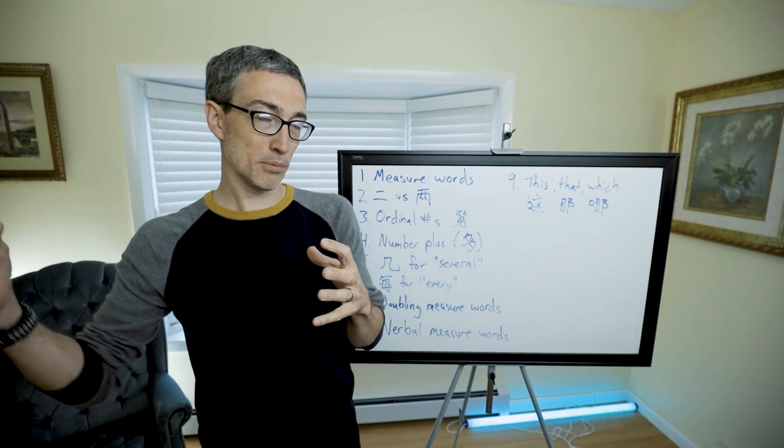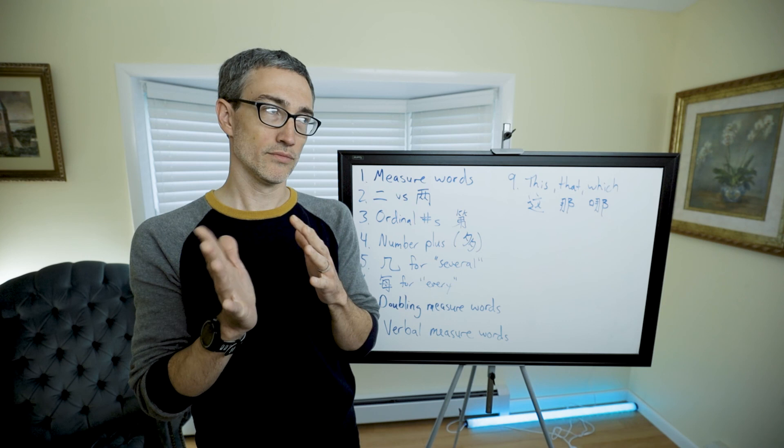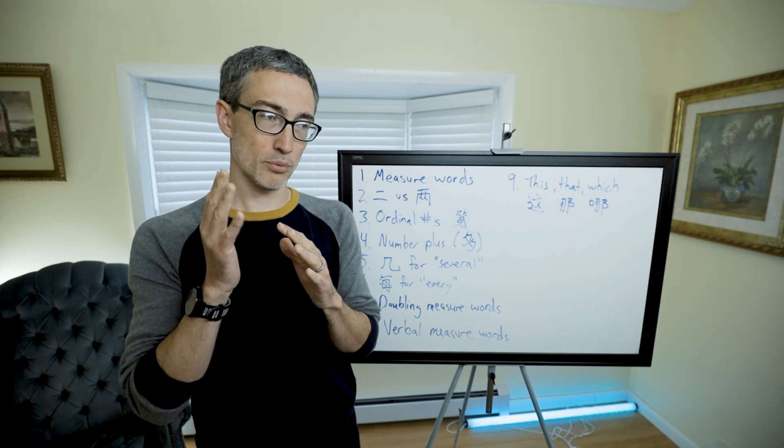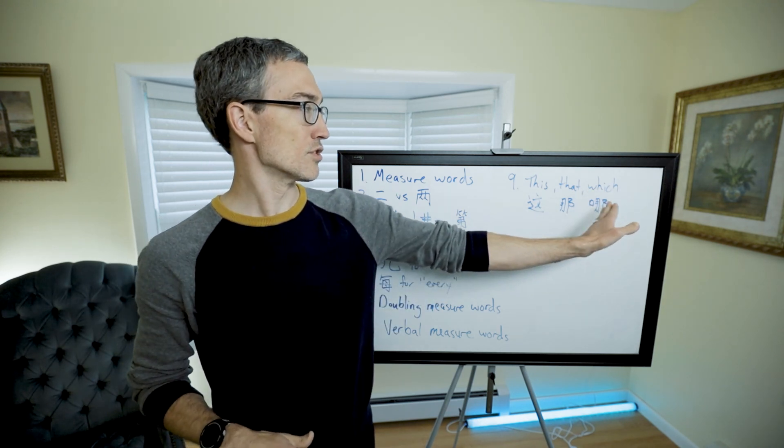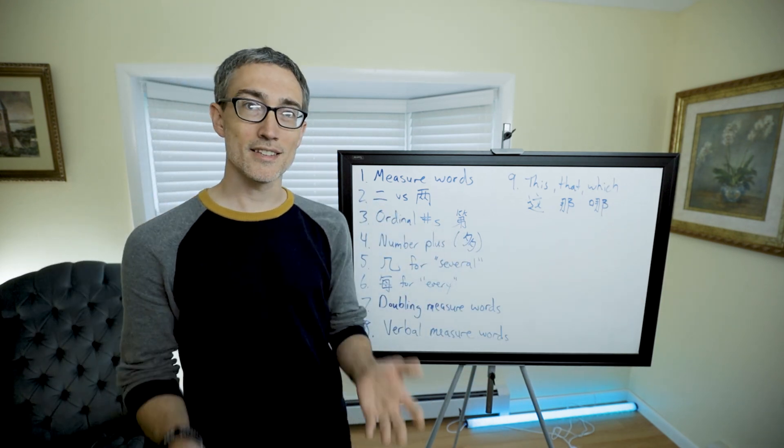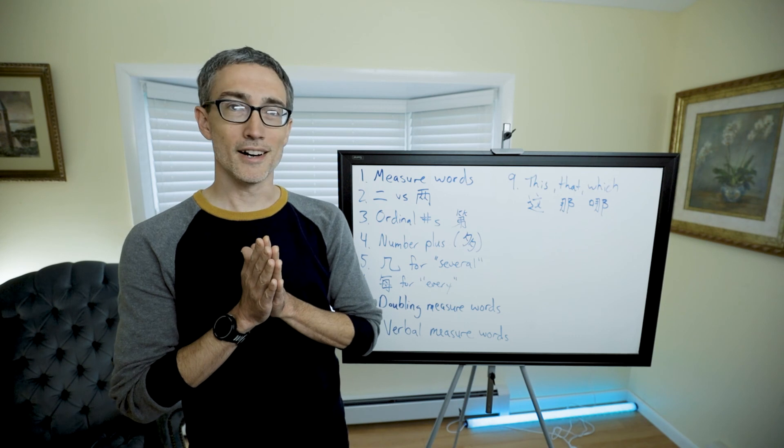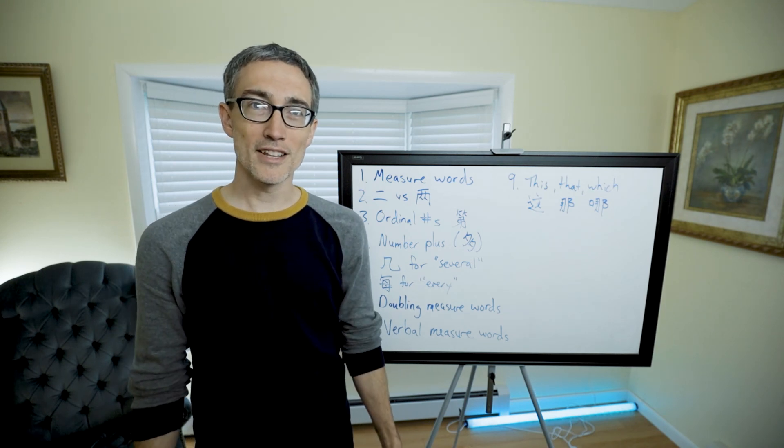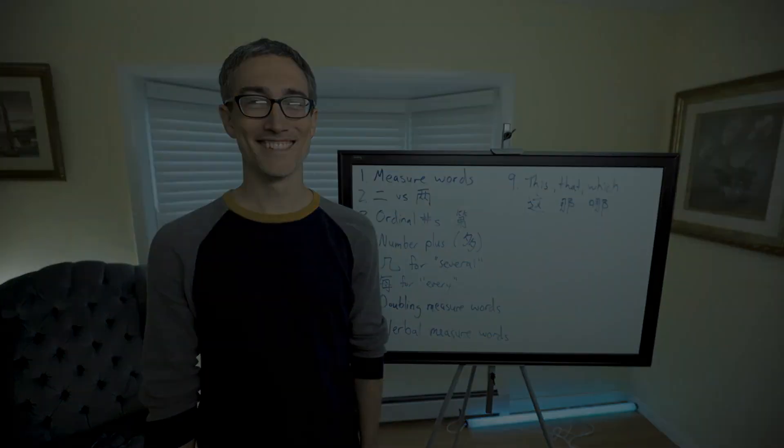You can put 些 (xiē) after any of these to make it into these, those, or which, meaning plural. Because the English which can point toward either a singular or plural, but if you want to make it plural in Chinese you can say 哪些 (nǎxiē) or 那些 (nàxiē). Okay, there you have it. That is our review for this week. Keep up the good work. You're learning Chinese. Man, you are amazing.